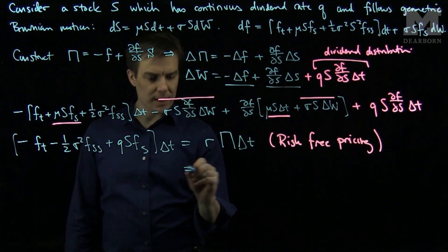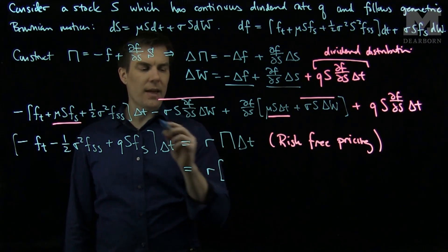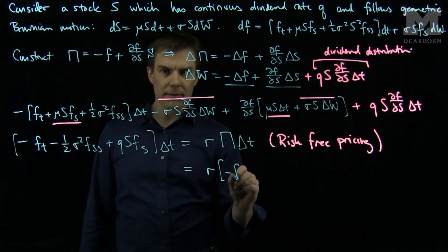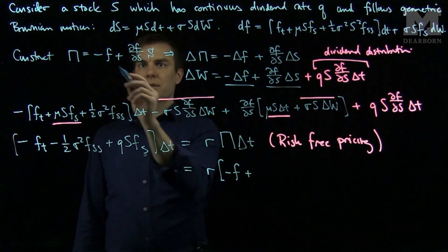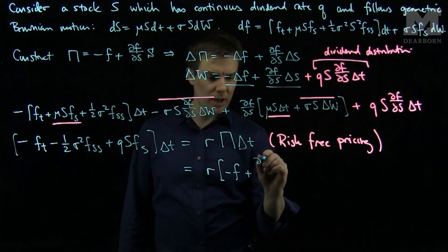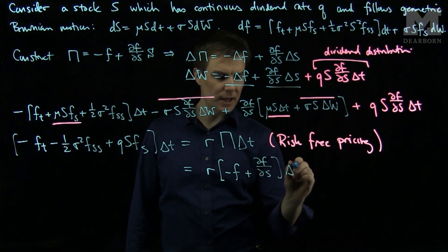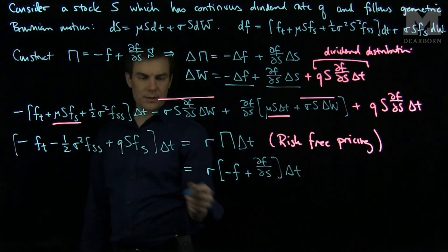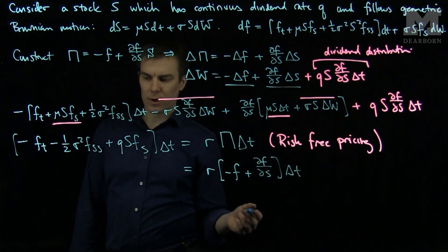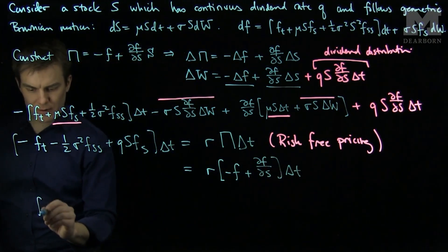So if I substitute what pi is, this is r. And then I have a negative F plus partial F partial S delta t. I can cancel the delta t on both sides and rearrange. If I rearrange, I have the following PDE.